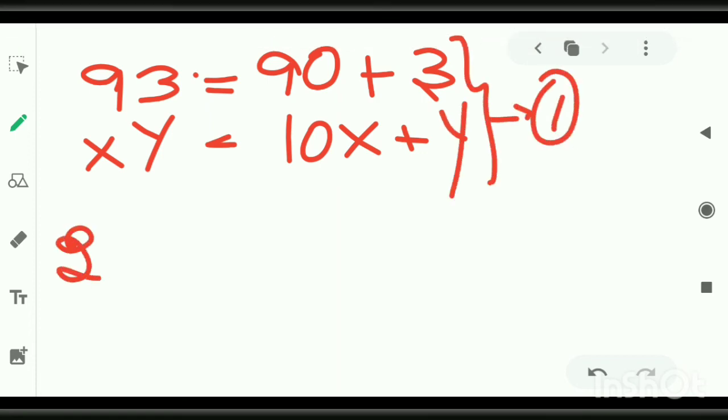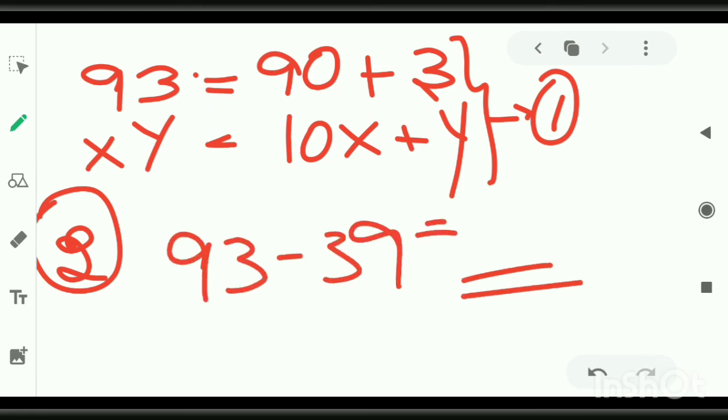Hint number 2. 93 minus 39 is equal to something. This is the information provided in the question. I am not giving the same two-digit number in the question. I am just saying you what is given in the question.